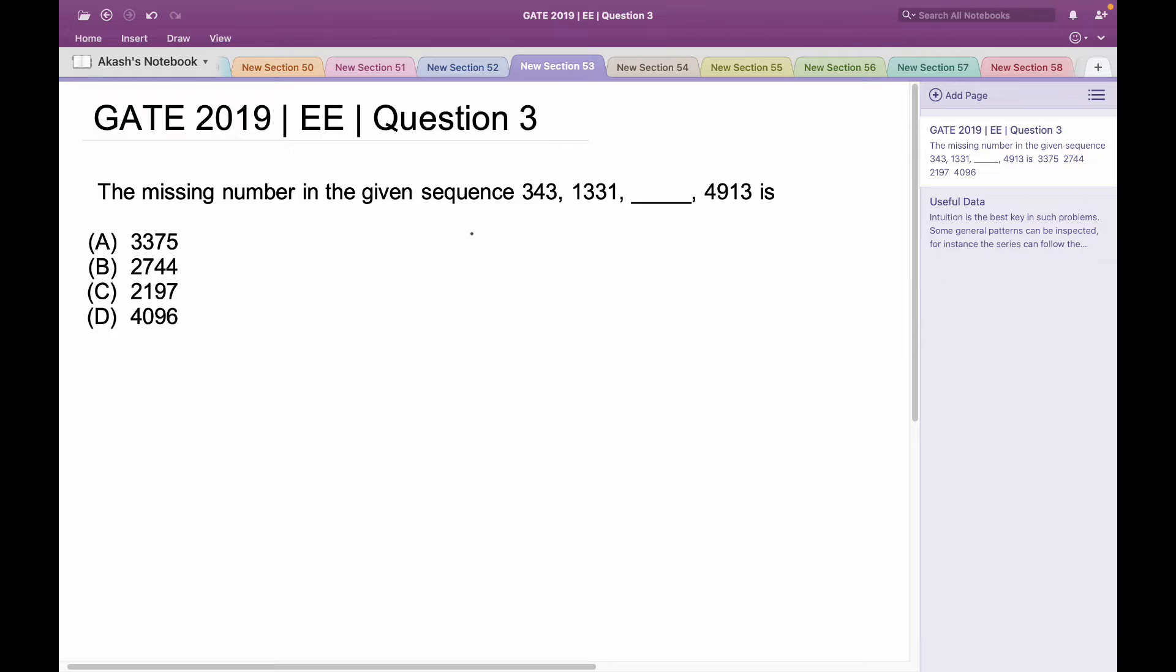Hello everyone, this is a question asked in GATE 2019 Electrical Engineering. The missing number in the given sequence 343, 1331, ?, 4913. We have been given three numbers and we need to determine the missing third number in the sequence.